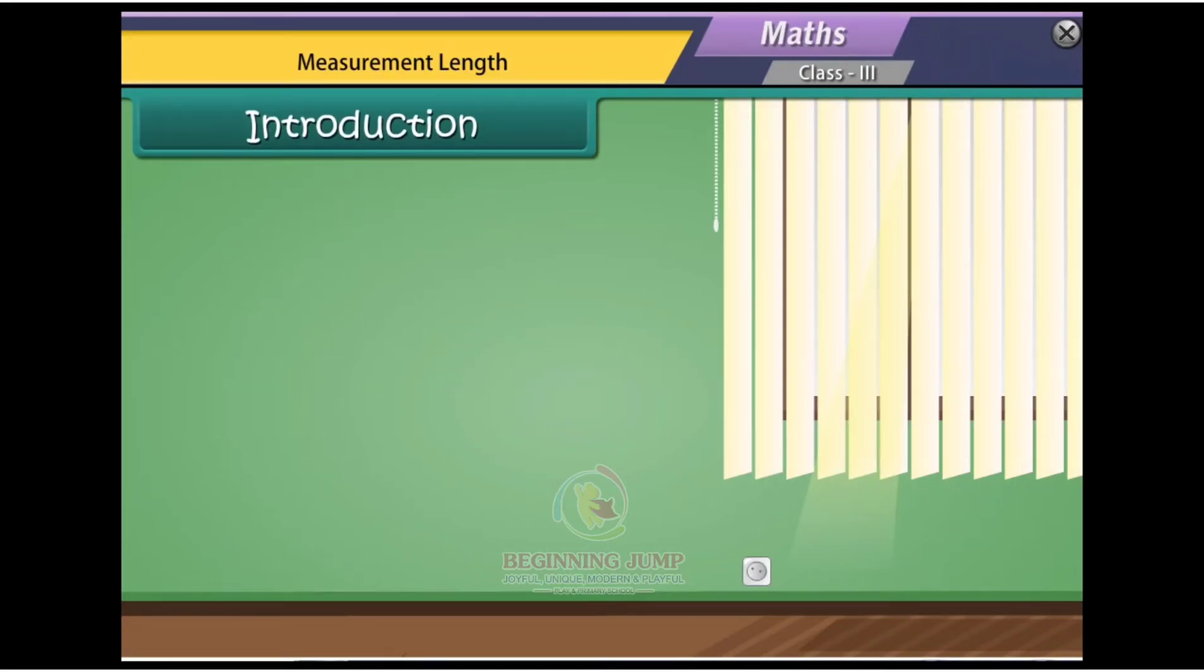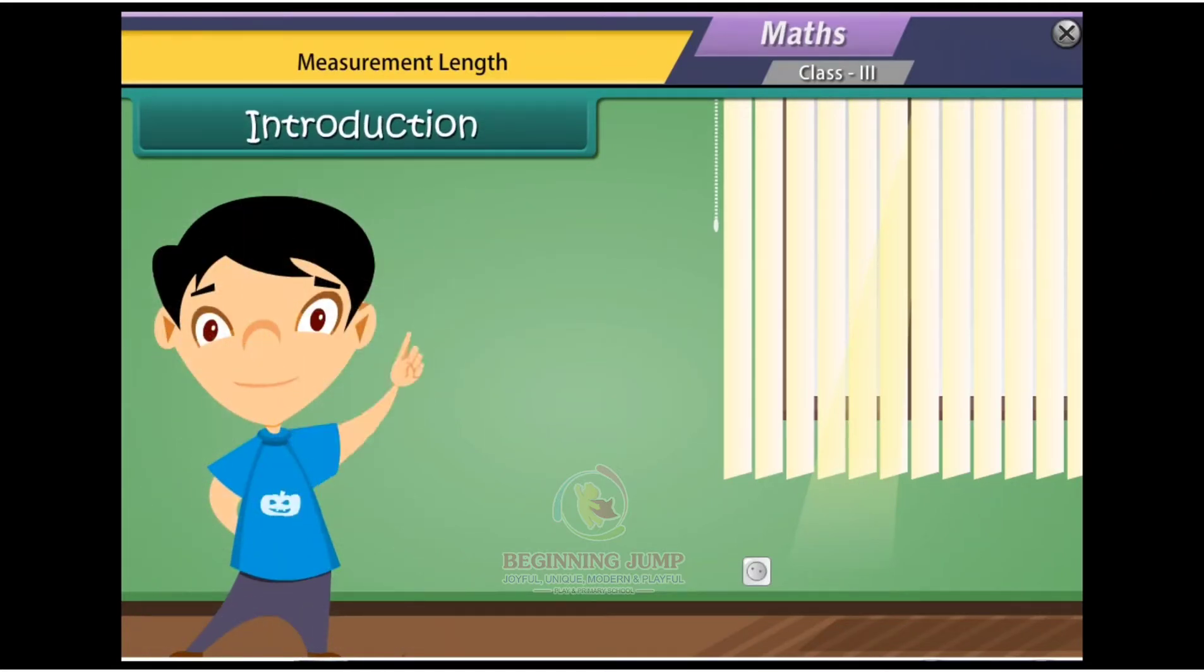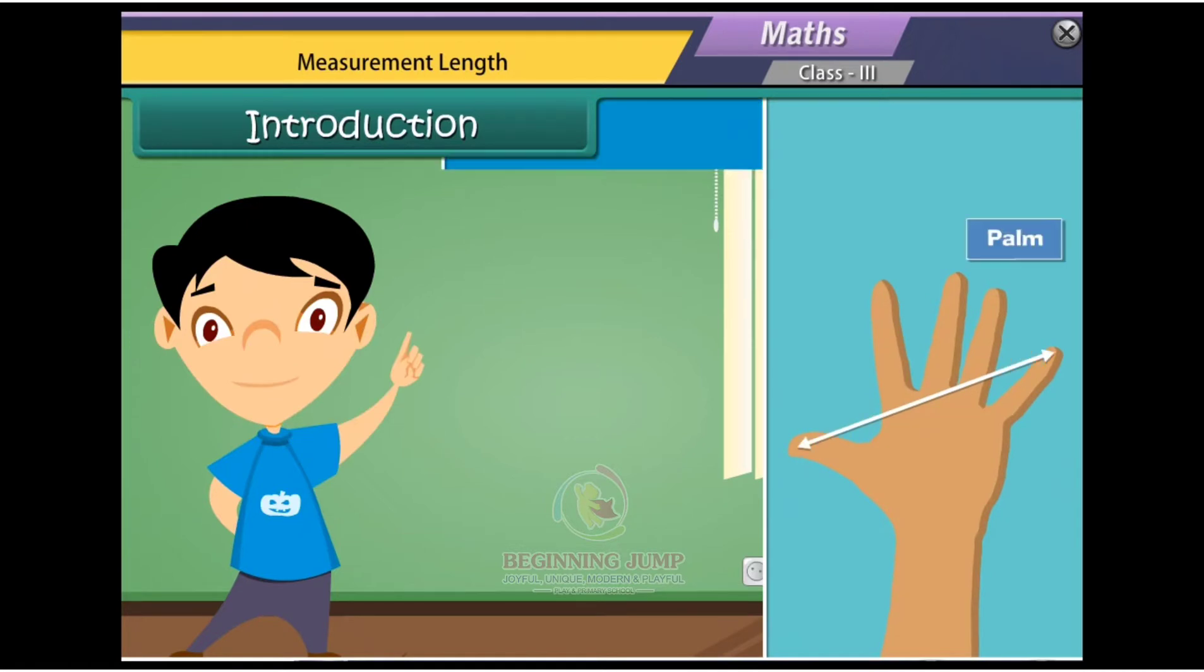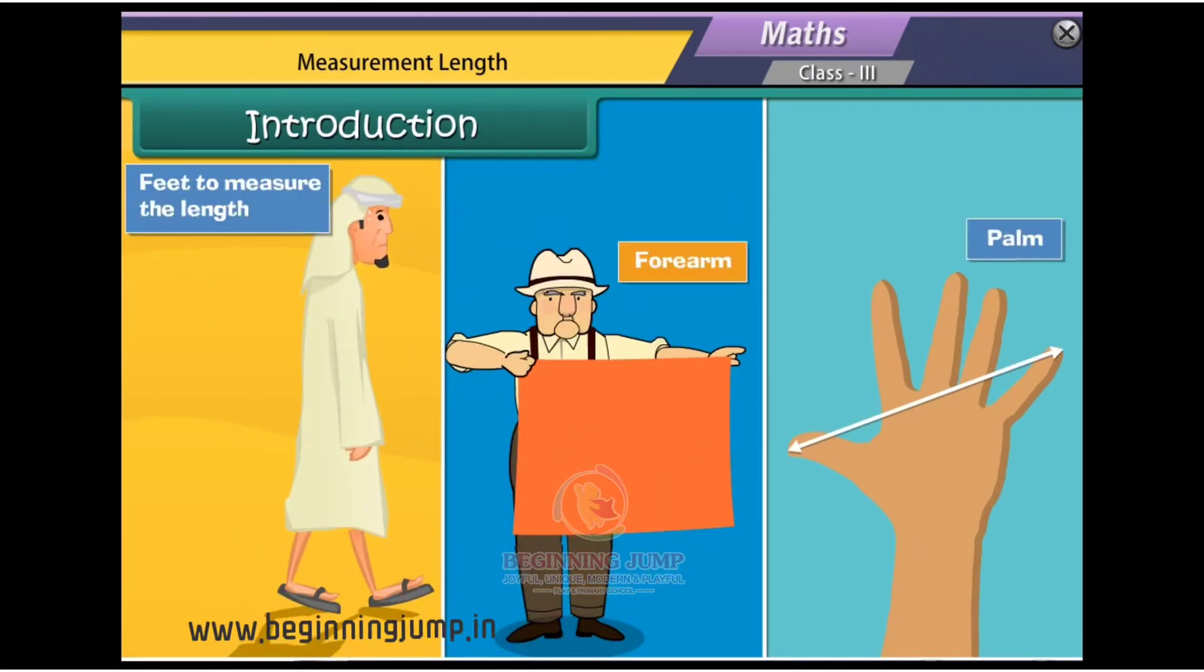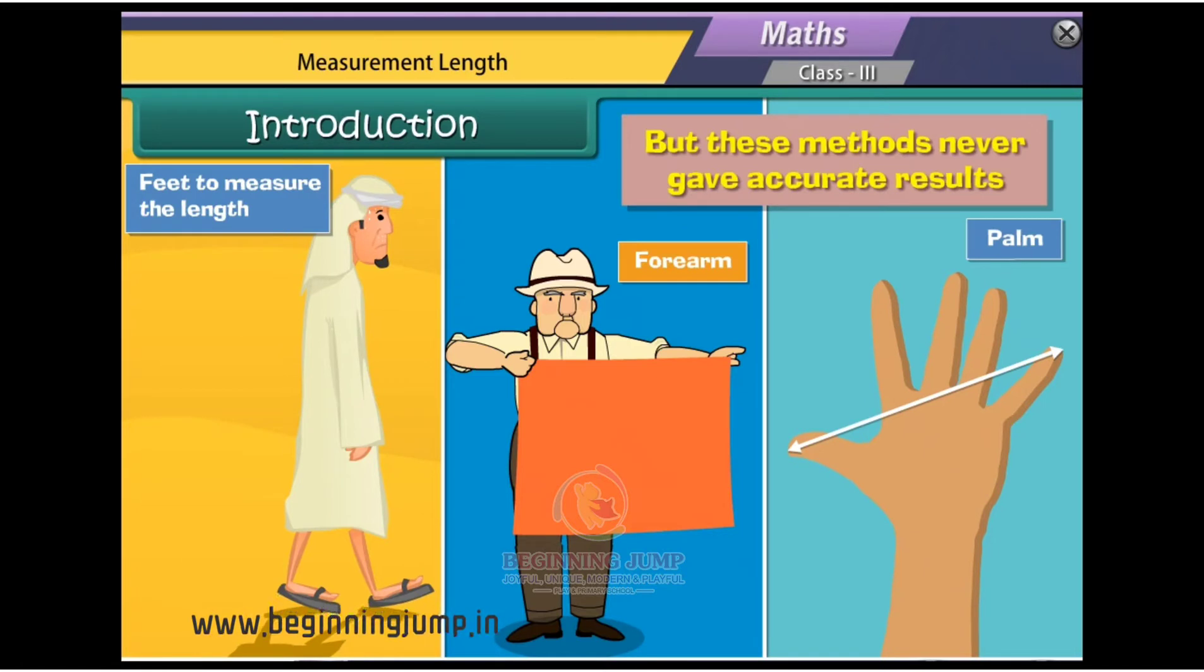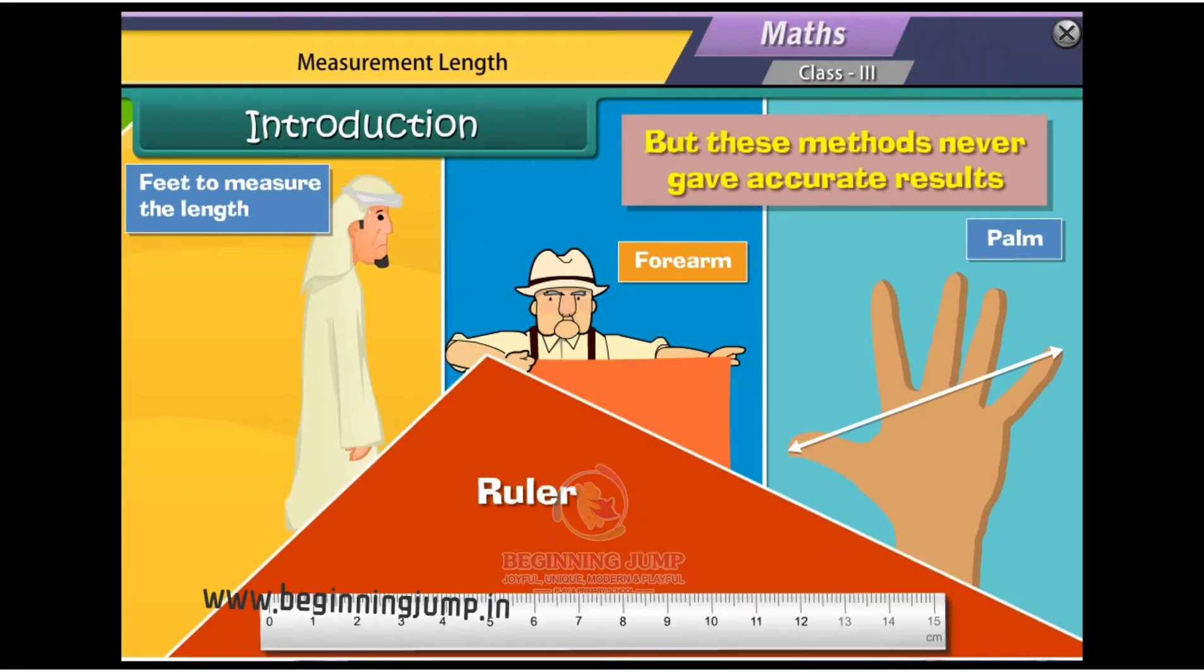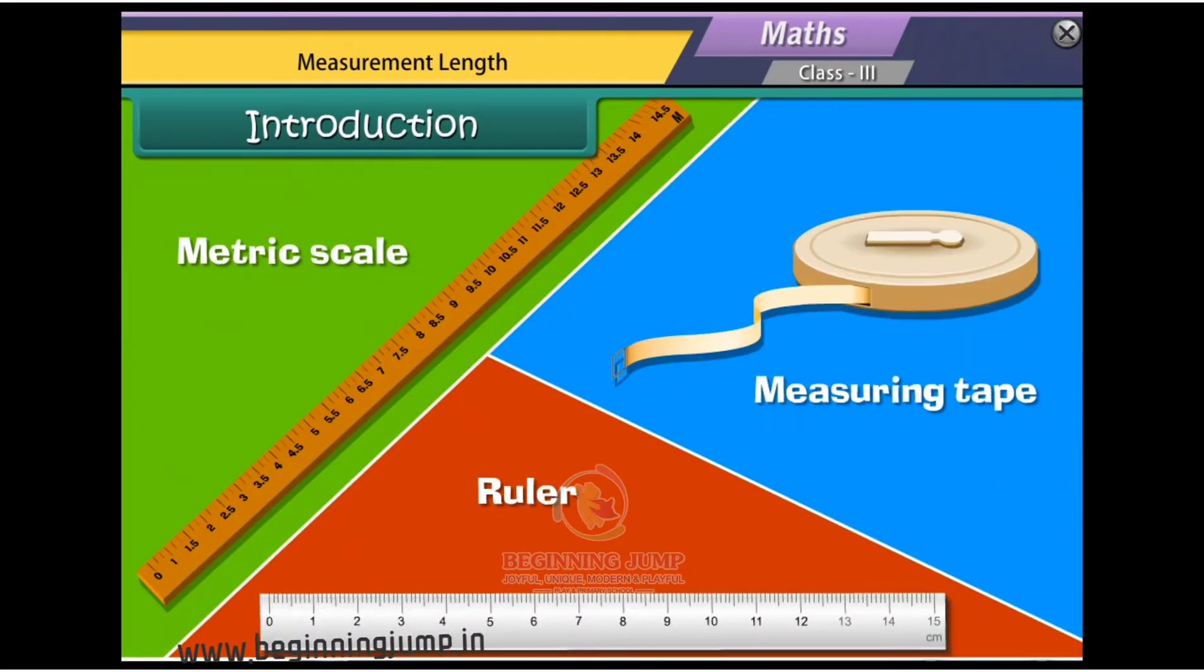Introduction. Long back, do you know how people used to measure the length of objects? They used their palm, forearm, or feet to measure the length of objects. But these methods never gave accurate results. Nowadays we make use of ruler, metric scale, and measuring tape to measure the accurate length and height of objects.